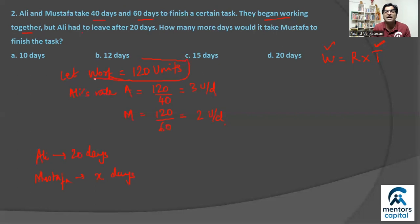So clearly total work we assumed is 120. Ali and Mustafa individually will complete it together. If we add their individual work, work done by Ali and work done by Mustafa, they will complete the task, which is nothing but 120 units. Now Ali's work done is rate into time, so that will be 3 into 20. And Mustafa's rate is 2 into time which is x. And so this is equal to 120.